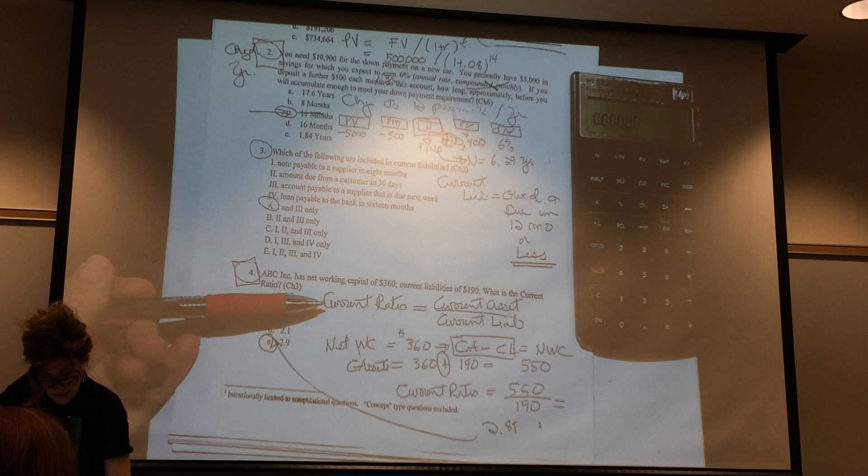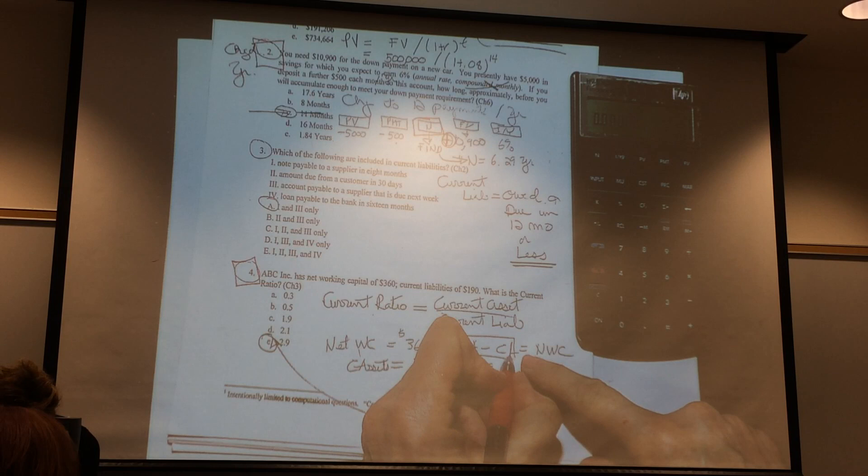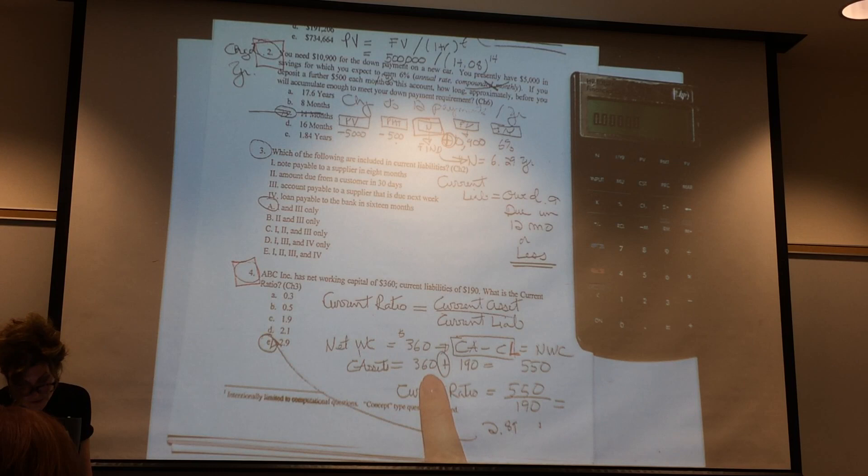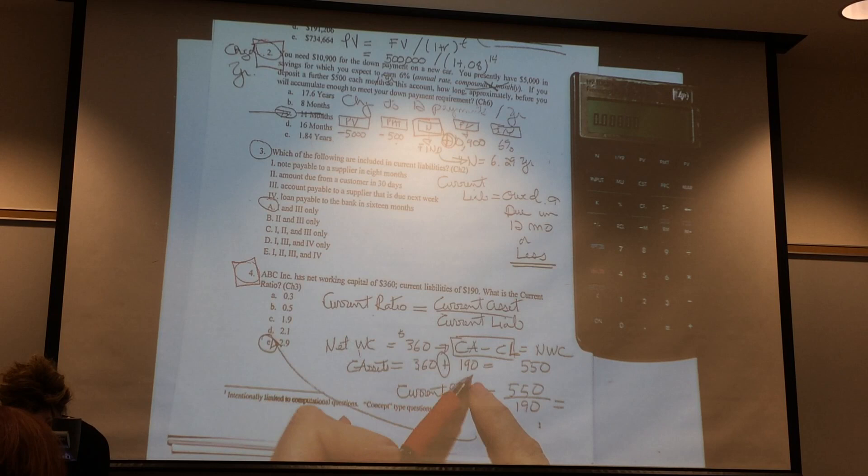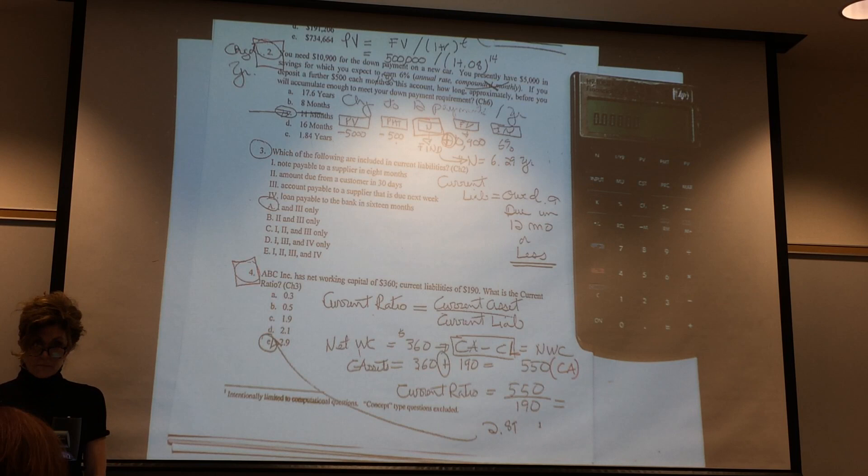So current ratio, if you remember, is current assets over current liabilities. And your net working capital is equal to current assets minus current liabilities. So what have they given you? They've given you the current assets of $360. You have, that's your net working capital. And you have your current liabilities of $190. That means that your current assets are $550.